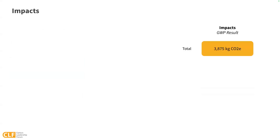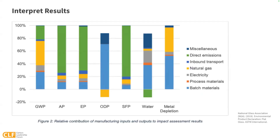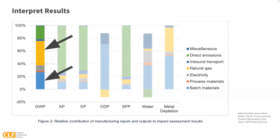Remember the functional unit: in order to make meaningful comparisons, we want to express results per functional unit. By dividing the project's total impact by the project area — or by the total quantity of product in the case of a product LCA — we arrive at the impact per functional unit. Finally, it's time to compile and interpret results. How one does this depends on the goal of the study — if the goal is to compare two different design options, one would likely look at side-by-side comparisons. In this example, the goal might be to identify hotspots: natural gas and batch materials were significant contributors to this product's GWP. To reduce impacts, the manufacturer might target efficiency improvements to reduce natural gas consumption, or look back in the supply chain to find alternative batch materials.